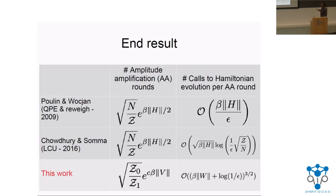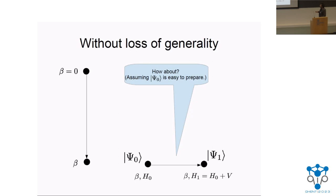Let's see the result we will show. We still get ratios of partition functions, but we potentially get a significant improvement because we are starting not from the infinite temperature state but from another state whose partition function Z₀ may be much less than the total Hilbert space dimension. That's the first improvement. The second improvement is that we do not scale with the norm of the original Hamiltonian, but with the norm of the perturbation V — intuitive because we are bypassing preparing the state from infinite temperature and assuming a quantum circuit that efficiently prepares the initial state.